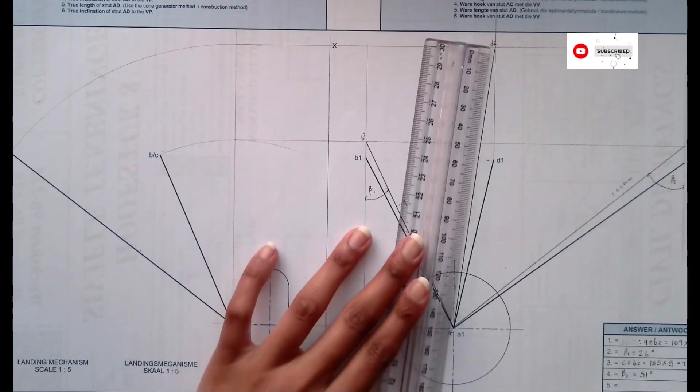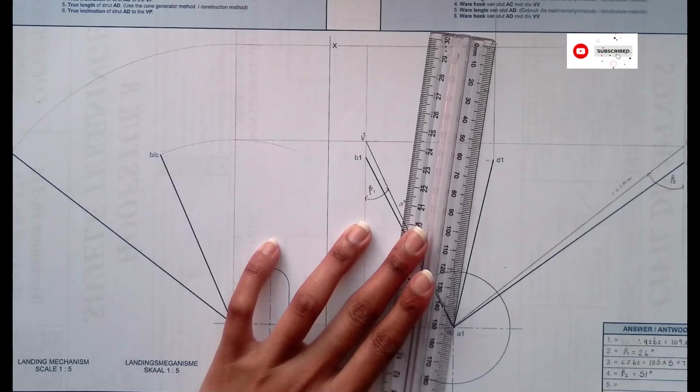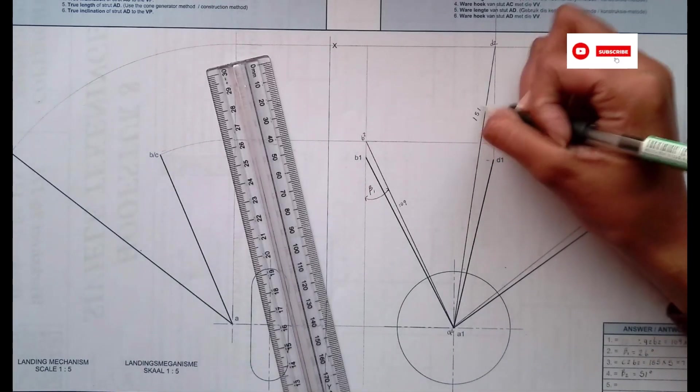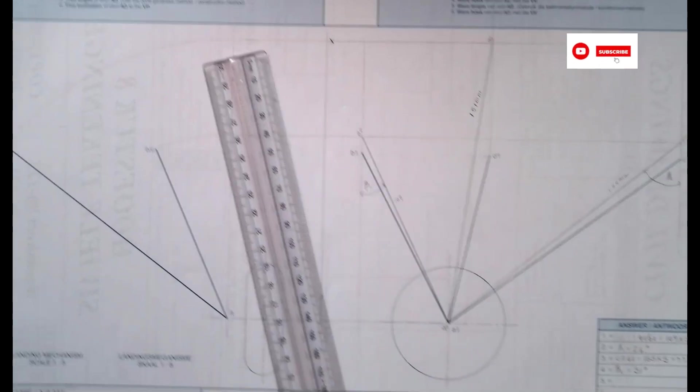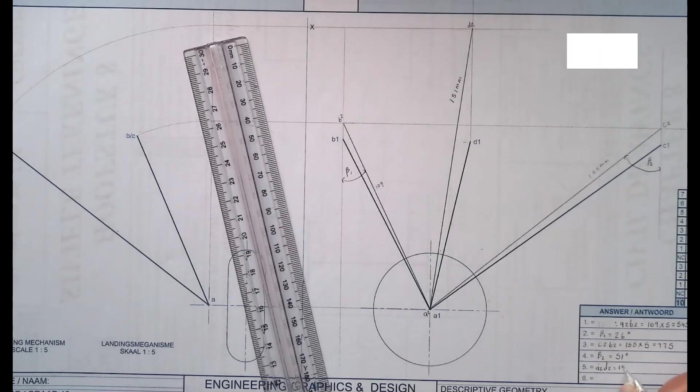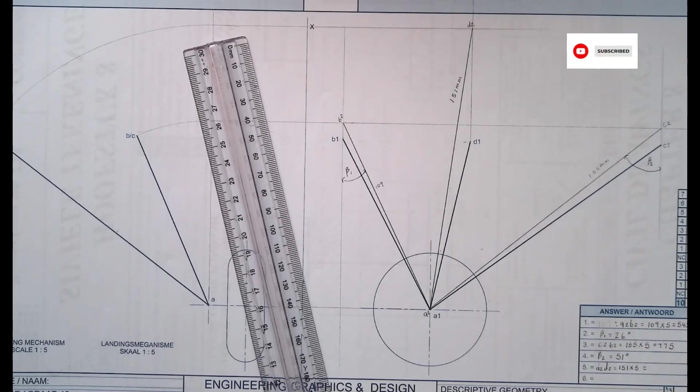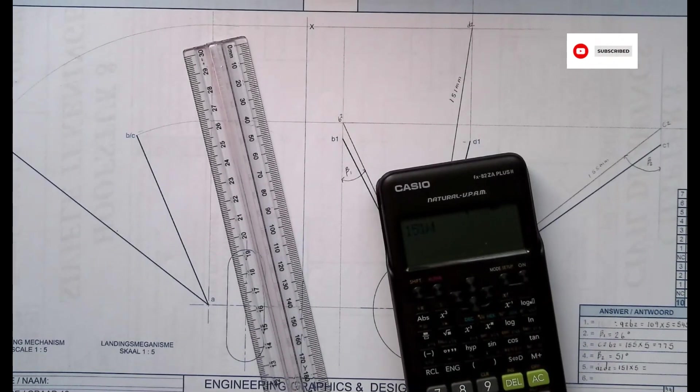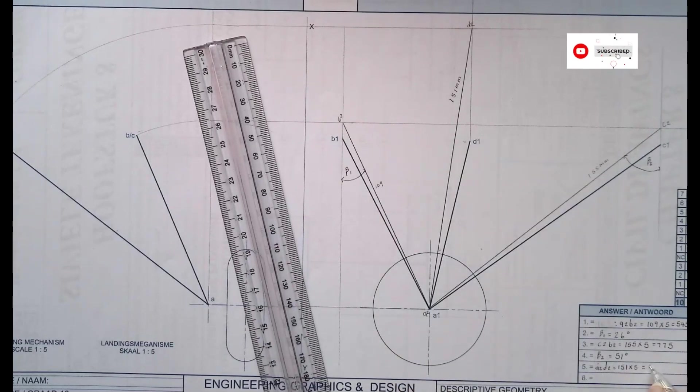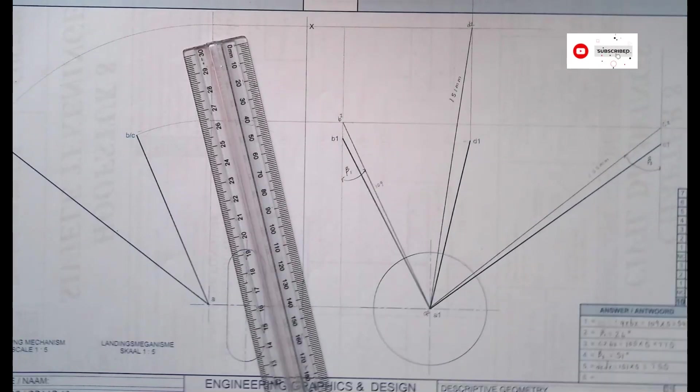Then you want to make sure that you measure it properly. And it is giving me 151. So if it's 151, that means I need to now say A2 D2 equals to 151 multiplied by 5, which then gives us 755. That's what you get.